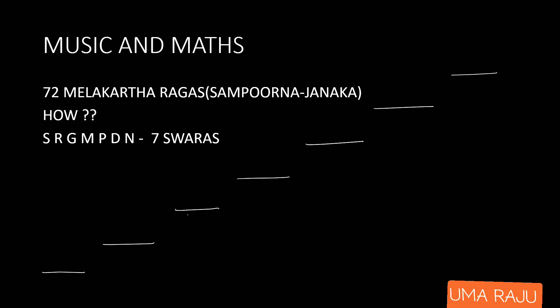In this video, let's see the beautiful math behind Carnatic music. We have 72 Melakarta ragas — you might have heard about it, we call it sampurna raga or janaka raga. How does this number 72 come about? Basically we have seven swaras, and they follow an order: Re is higher than Sa, Ga is higher than Re, Ma is higher than Ga, and so on. We are going to arrange these by following certain rules.